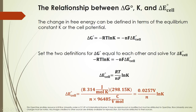From the thermodynamics chapter, we also know that delta G naught equals negative RT times the natural log of K, where K is the equilibrium constant. Setting that equal to our definition — delta G naught equals negative NF times E°_cell — and solving for the cell potential gives us: E°_cell equals RT over NF, multiplied by the natural log of K.